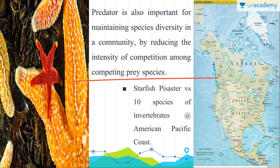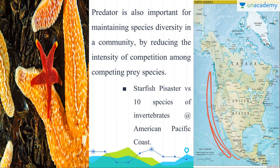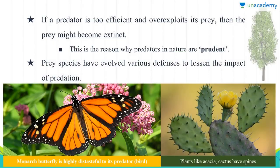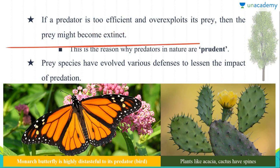Predators are also important for maintaining species diversity in a community because they reduce the intensity of competition among prey. For example, when the sea star Pisaster was removed from the American Pacific coast, 10 species of invertebrates went extinct. If a predator is too efficient and over-exploits its prey, the prey might go extinct and in return the predator would also become extinct.